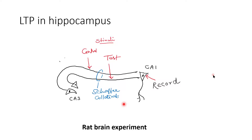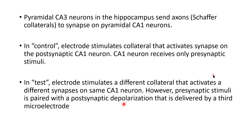Long-term potentiation in the hippocampus is the basis of memory. It can be demonstrated by a rat brain experiment in which hippocampal CA3 neurons send collaterals — called Schaffer's collaterals — to the CA1 neuron. In the control condition, one set of Schaffer collaterals is stimulated and the potential is recorded at CA1 neurons. In the test condition, a second set of Schaffer's collaterals is stimulated while the CA1 neurons are also partially depolarized, and EPSPs are recorded at CA1. Pyramidal hippocampal neurons send axons to the CA1 pyramidal neurons.